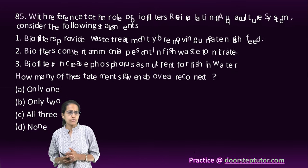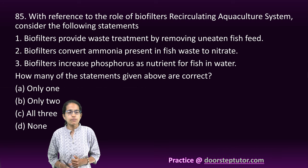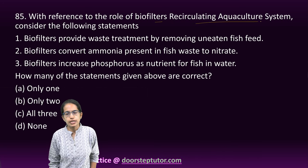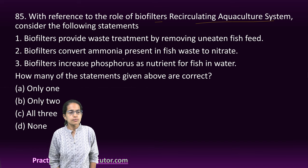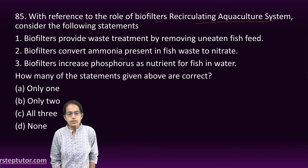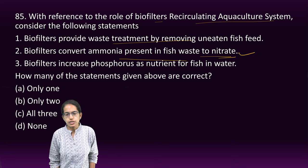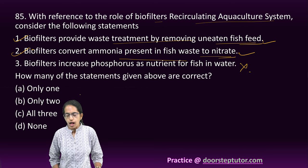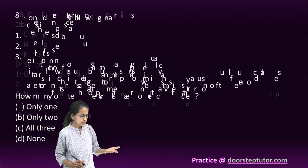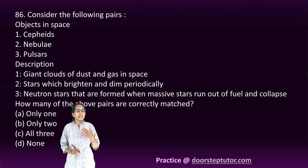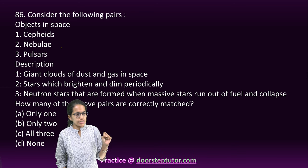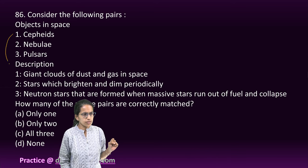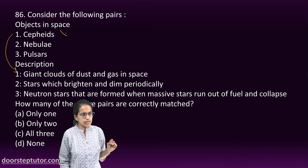The next question is about bio-filters in recirculating aquaculture systems. It converts ammonia present in fish waste into nitrate — that's correct. It provides wastewater treatment by removing uneaten fish feed — correct. However, it does not increase the phosphorus level. So statements 1 and 2 are the correct options.